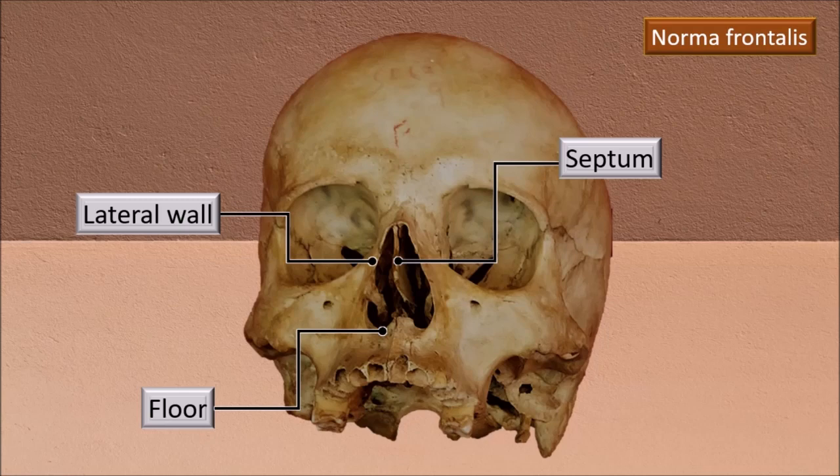You can see the sloping lateral wall, whereas the central septum lies right in the sagittal plane — it is vertical. The lateral wall, as seen in the anterior view, appears to converge like a tent towards the roof. Obviously, the roof is going to be very narrow compared to the base. The lateral wall and the base are largely made up of the maxilla bone.